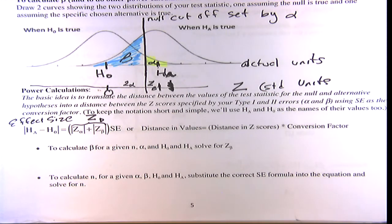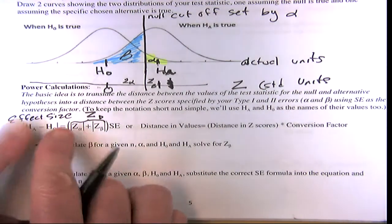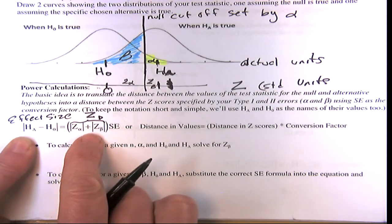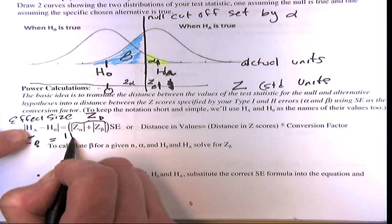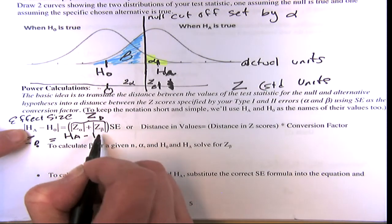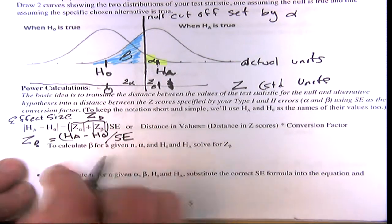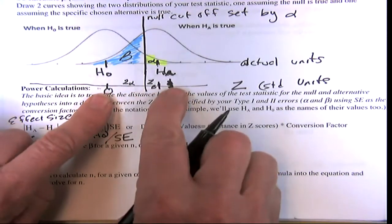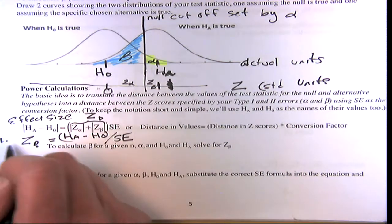The standard error is the conversion factor between actual units and z-scores. z_D equals (H_a − H_0) over the standard error. Once you get z_D, z_beta = z_D − z_alpha. From z_beta you look up the middle area in Table A (the normal curve table), then get the tail to find the Type 2 error probability.